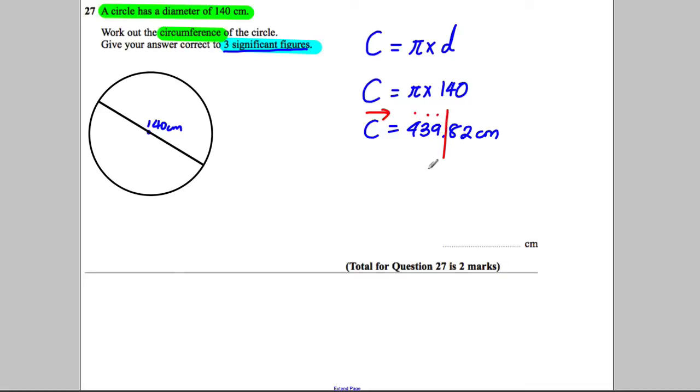We can't put a 10 in the column, so we put a zero there and it would be 440 centimeters. Our answer is 440 centimeters correct to three significant figures.